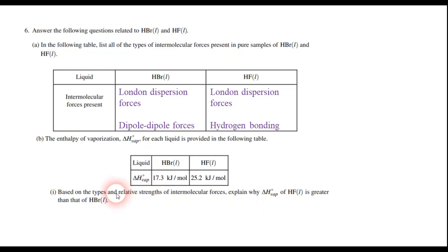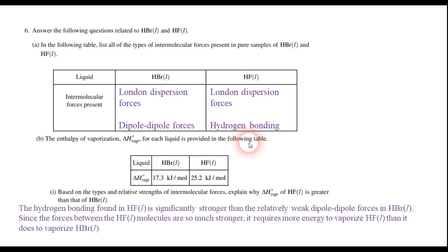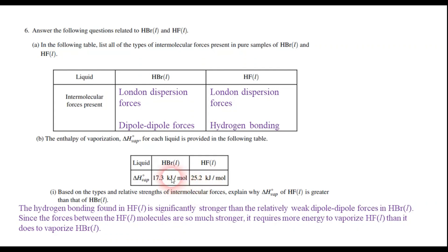Part B1 asks us, based on the types and relative strengths of intermolecular forces, to explain why the heat of vaporization of HF is higher than that of HBr. The answer is that the hydrogen bonding found in HF is significantly stronger than the much weaker dipole-dipole forces in HBr. Since the forces holding the HF molecules together are so much stronger, it's going to require a lot more heat energy — 25.2 kilojoules per mole — to vaporize HF than to vaporize HBr. Give yourself a point if you said something like that.